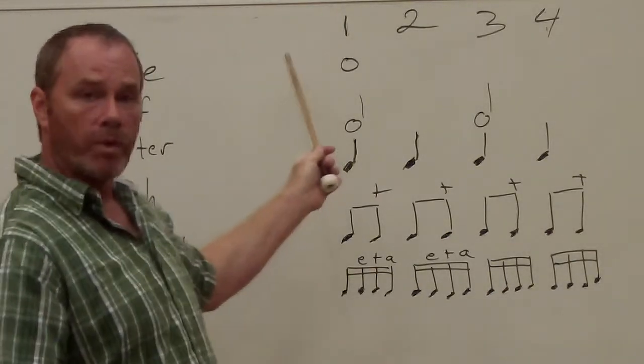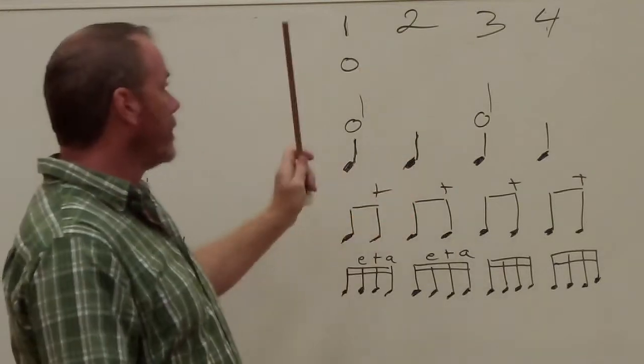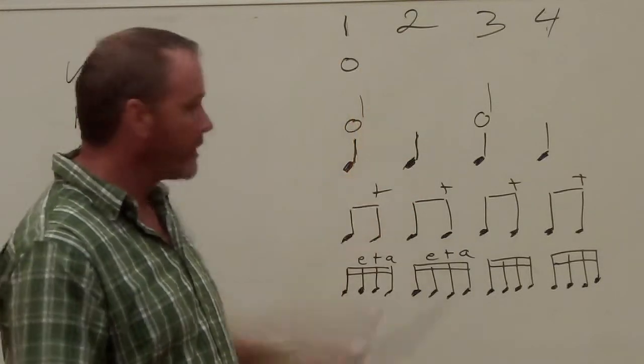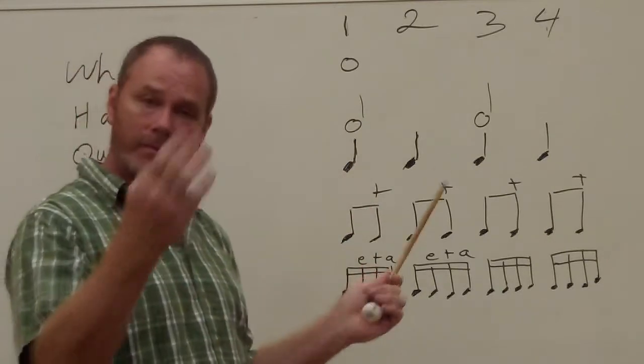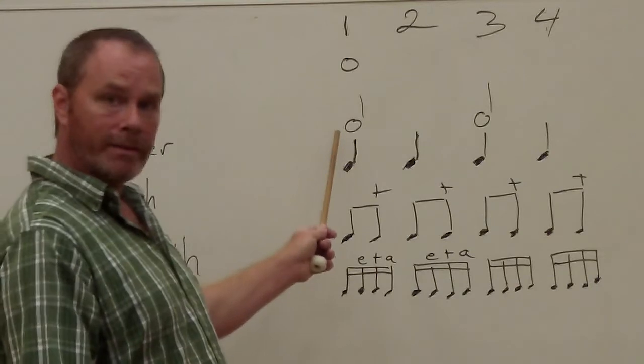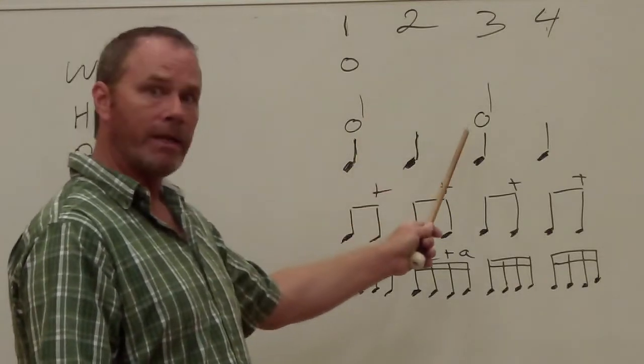The whole note is worth four beats: one, two, three, four. The half note divides that in half. That's worth two beats: one, two, three, four.